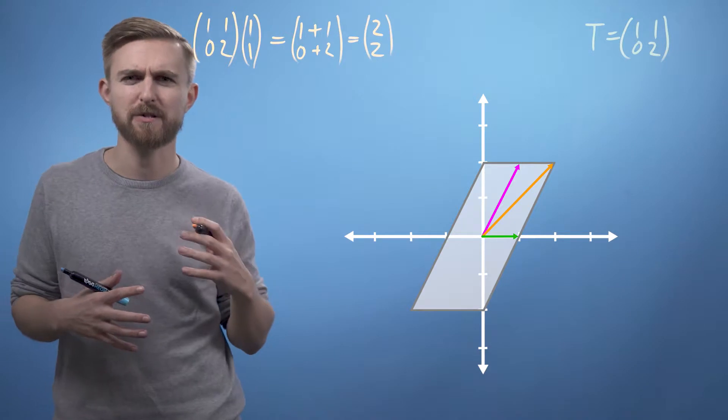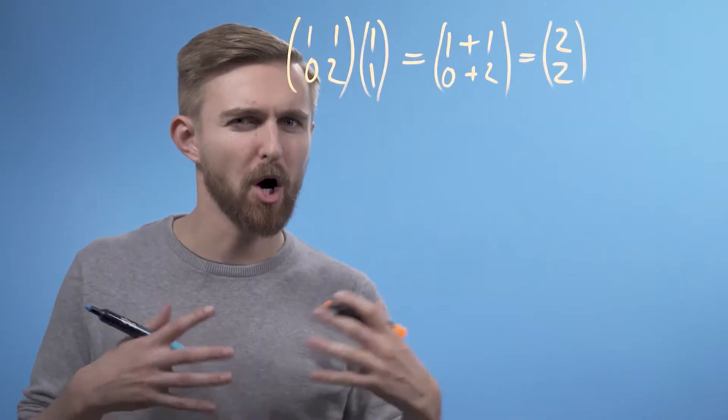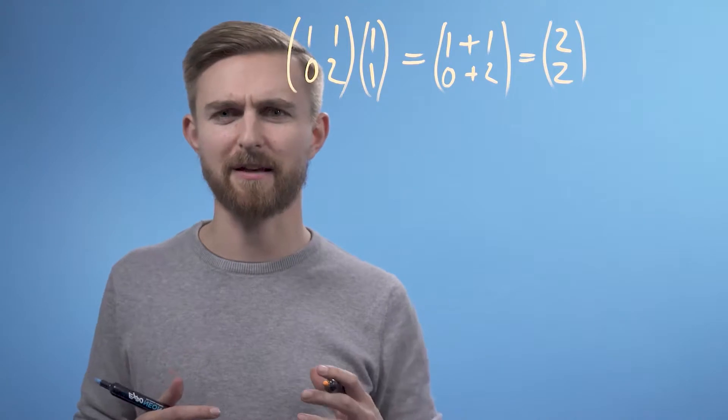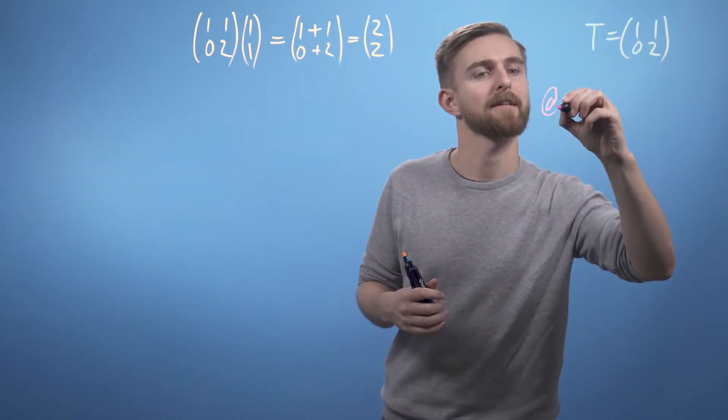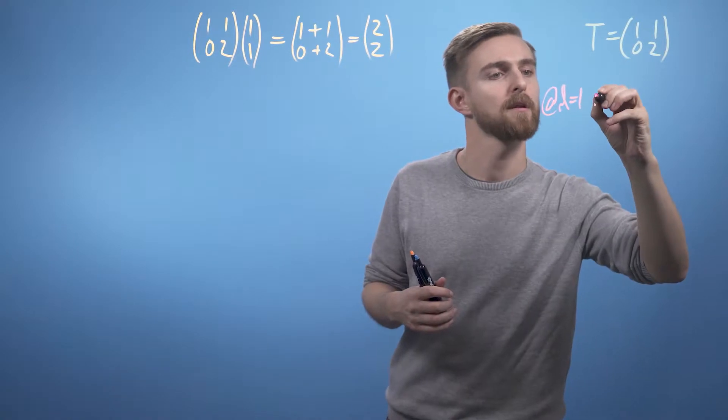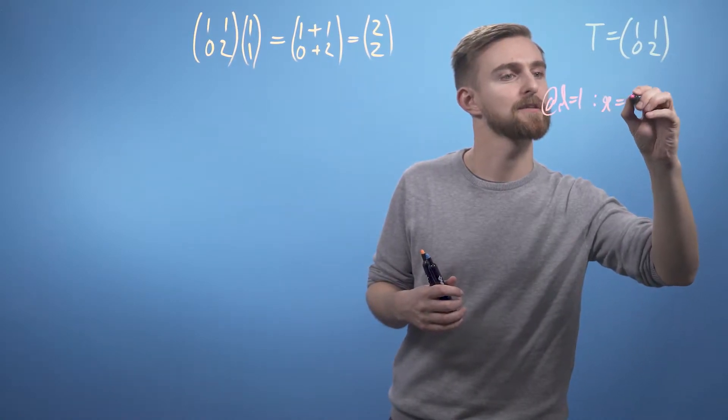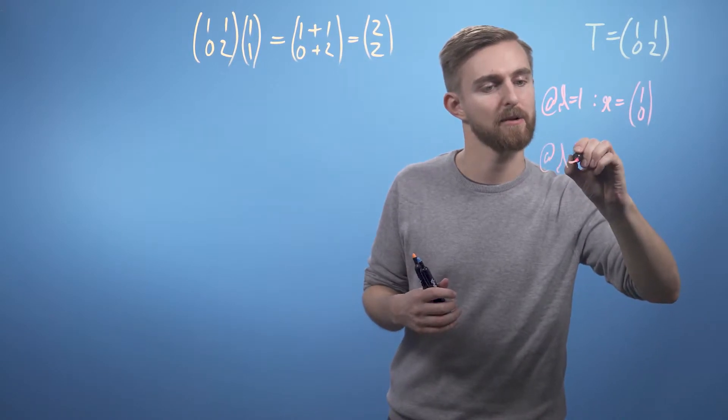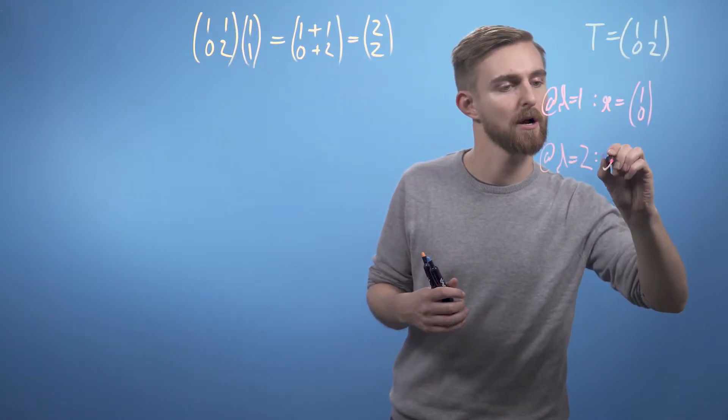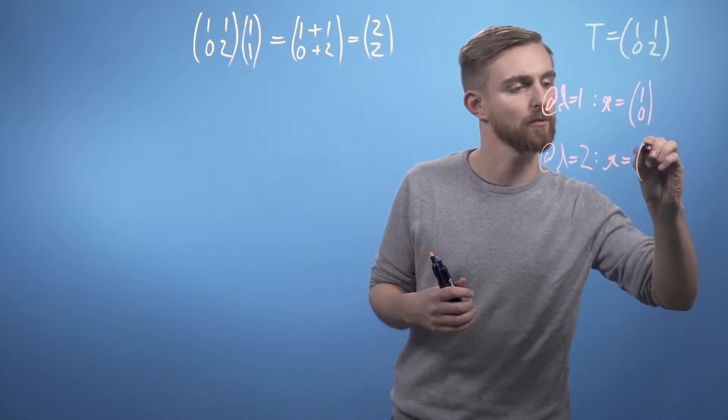Because we've chosen such a simple transformation, hopefully you've already spotted the eigenvectors and can state their eigenvalues. These are: at lambda equals 1, our eigenvector is (1, 0), and at lambda equals 2, our eigenvector equals (1, 1).